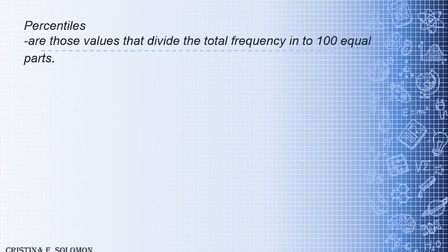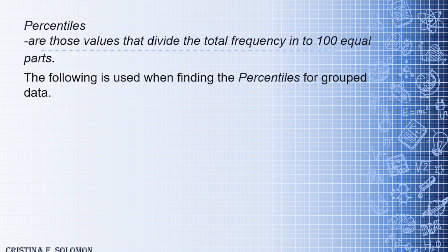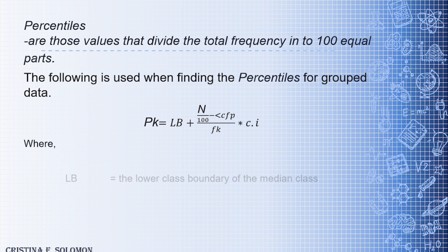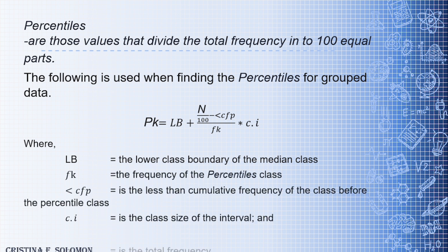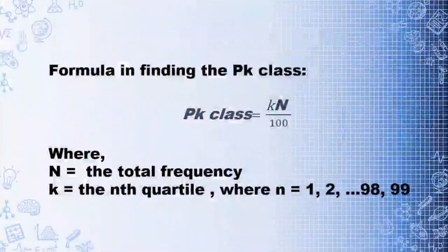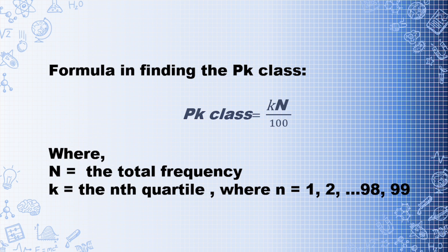Next is percentiles. Percentiles are those values that divide the total frequency into 100 equal parts. The formula is the same structure as quartiles and deciles, but with a denominator of 100. The formula for the PK class position is: PK class = K × N / 100, where N is the total frequency and K ranges from 1 to 99. When converted to percent, P1 = 1%, P2 = 2%, P3 = 3%, and so on.